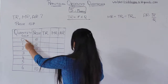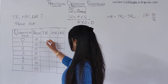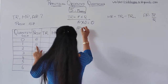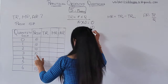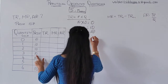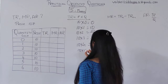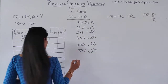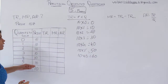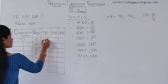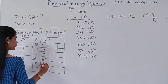So let me find this out. 10 into 0 is 0, so TR is 0. 10 into 1 is 10. 10 into 2 is 20. 10 into 3 is 30. 10 into 4 is 40. 10 into 5 is 50. 10 into 6 is 60. So we got the TR: 0, 10, 20, 30, 40, 50, and 60.